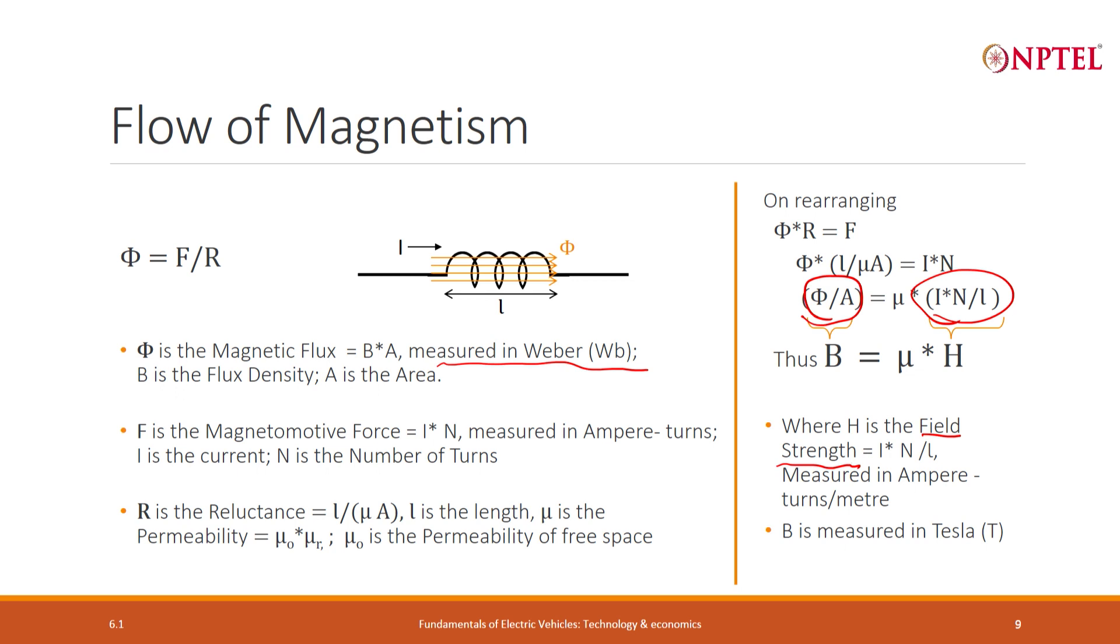So the flux density is equal to mu times field strength. In this equation again we have removed all the geometry factors. There is no L, there is no A, only material property comes. So if I plot B versus H, what I get is just a property of the material which is unaffected by the geometry.